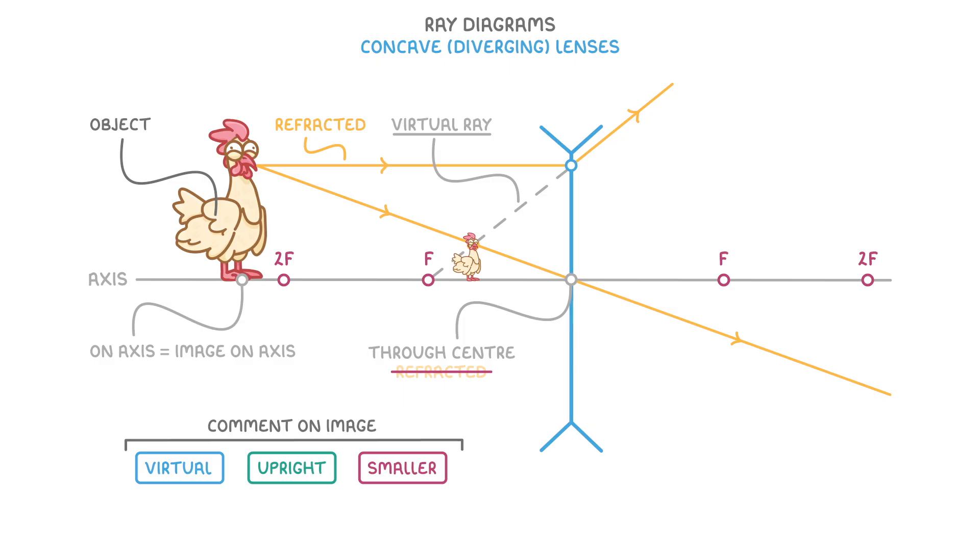And if you're using a concave lens like this, then the image will actually always be virtual.